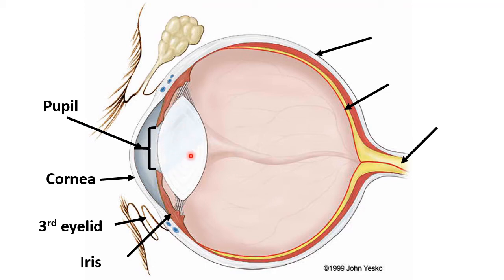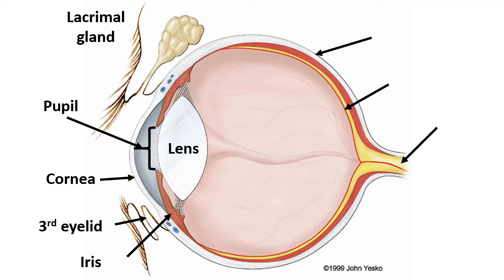Number five is the easy one — this structure right here which divides the eye into two chambers. That's the lens. Number six is the gland which secretes our tears. That is the lacrimal gland.